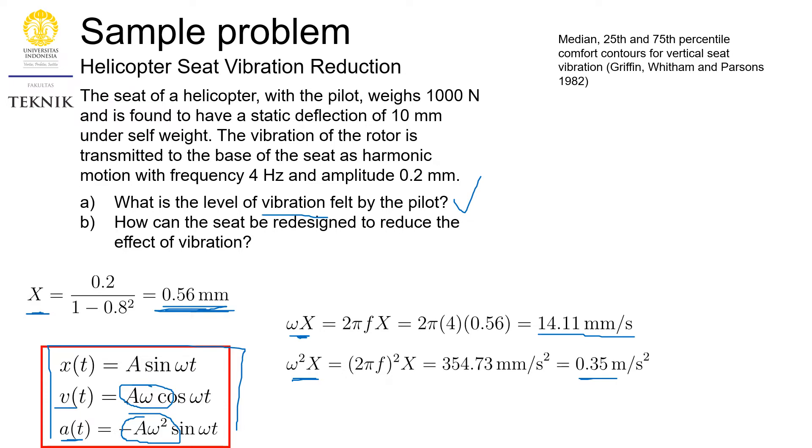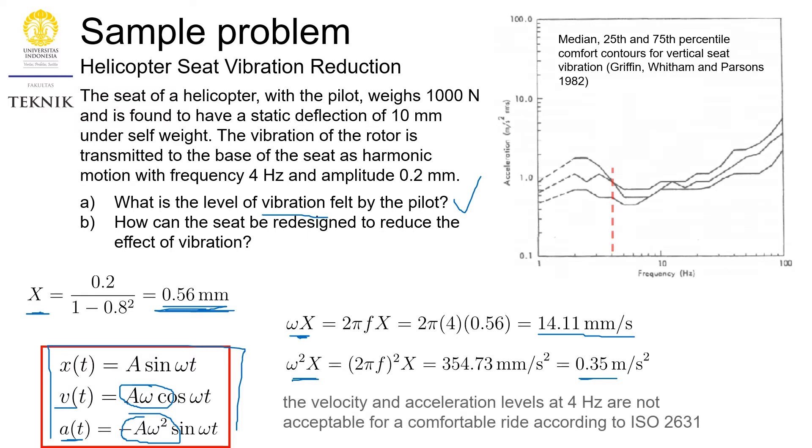Now we need to think about how severe is this level of vibration before we begin to answer question number B, question B, you know, for redesigning of the seat. We can look at this ISO 2631, and it says that this much amount of velocity and acceleration at 4 Hz are not acceptable for a comfortable ride.